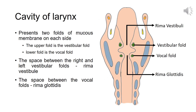Now let's see the cavity of the larynx. The cavity of the larynx presents two folds of mucous membrane on each side, which we already saw in Part 1. The lower border of the quadrangular membrane is the vestibular fold, and the upper border of the conus elasticus is the vocal fold. The space between the right and left vestibular folds is called the rima vestibuli, and the space between the two vocal folds is called the rima glottidis.